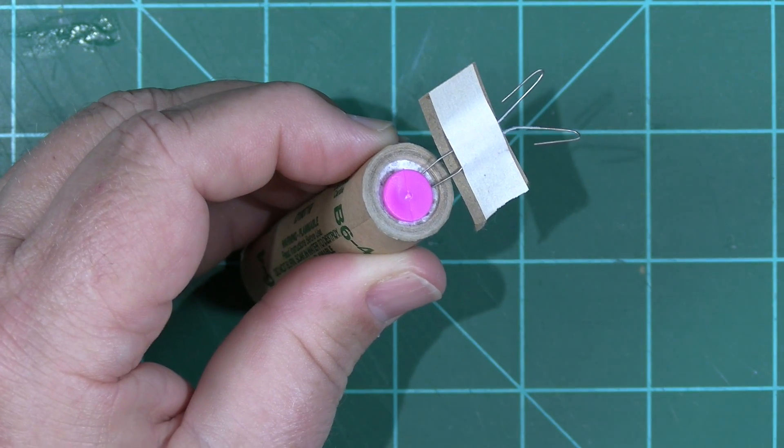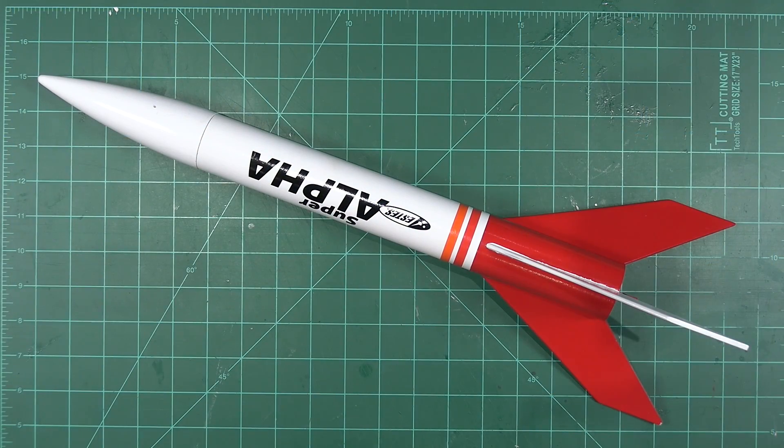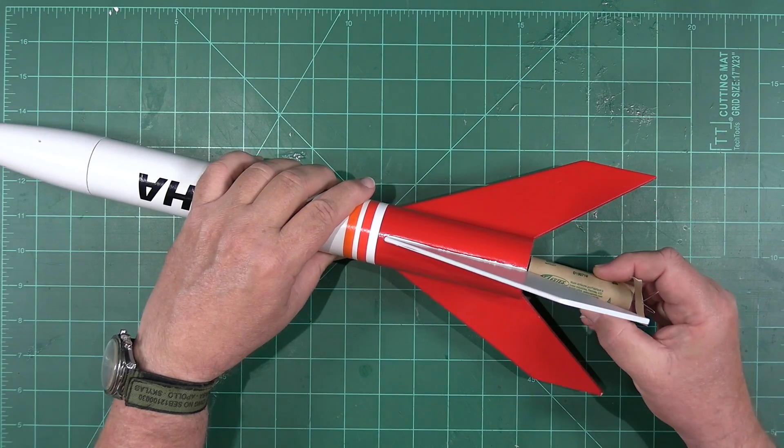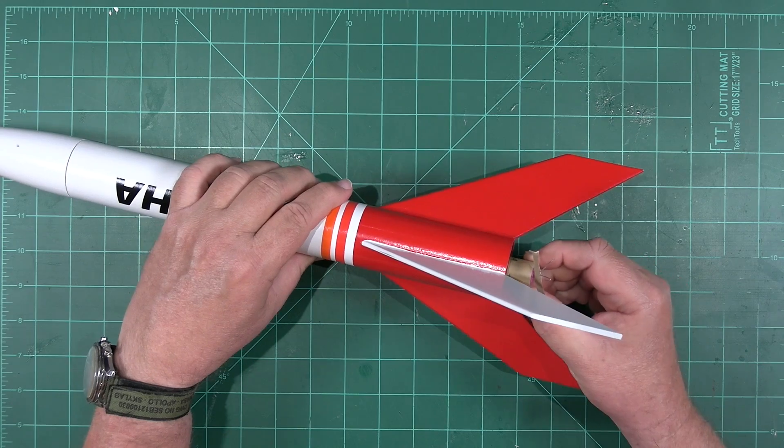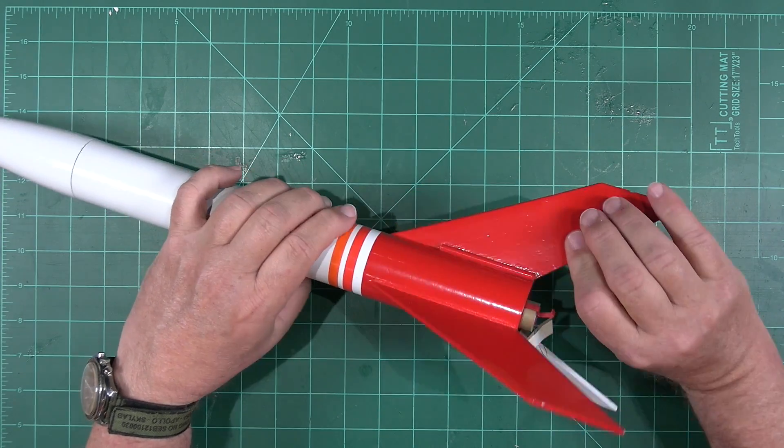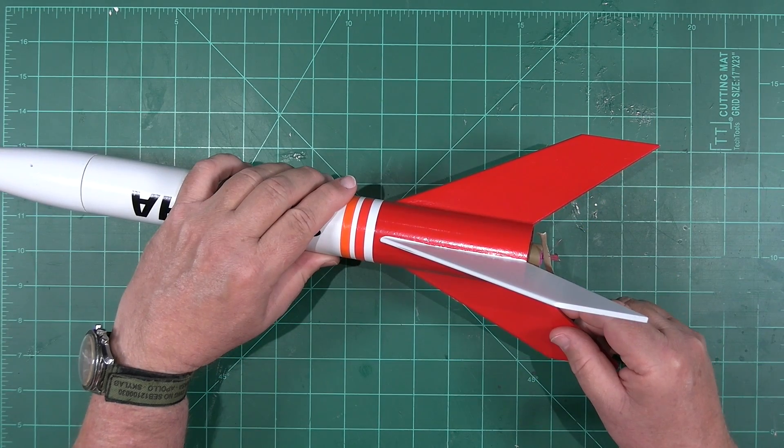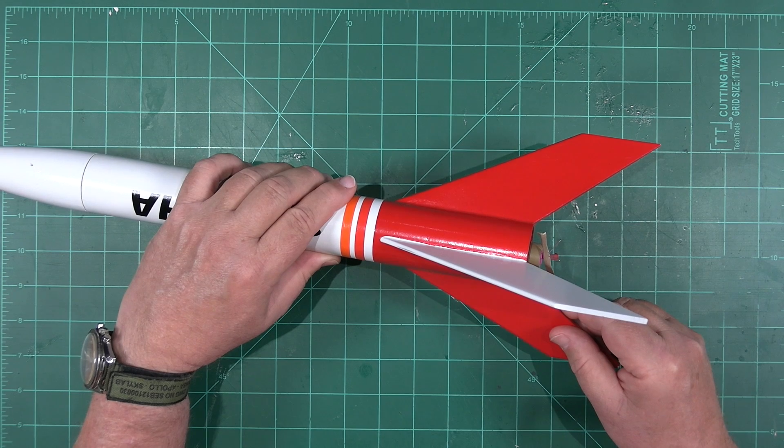Our motor is now ready for installation in the rocket. Here's a rocket that we have ready to fly. When we put the motor into place, we're going to make sure that the igniter leads are on the side of the rocket opposite the launch lug and the engine hook. This helps get the igniter leads away from the metal launch rod once the rocket is in place on the pad.